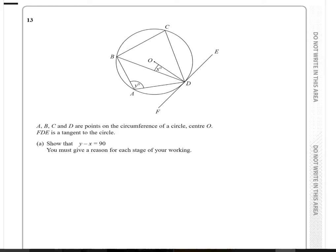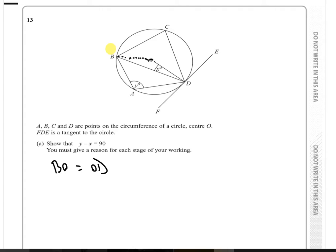How do we actually go about doing something like this? What I'm going to do first is draw a dotted line from B to D, which we can see is also the radius. Since BO equals OD, we can see that angle OBD will be equal to angle BDO, which is simply equal to X degrees. So we can put X degrees there also.